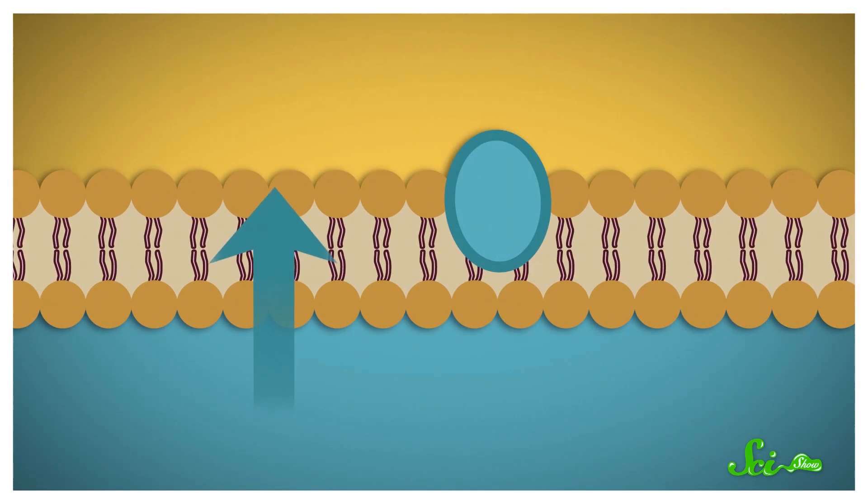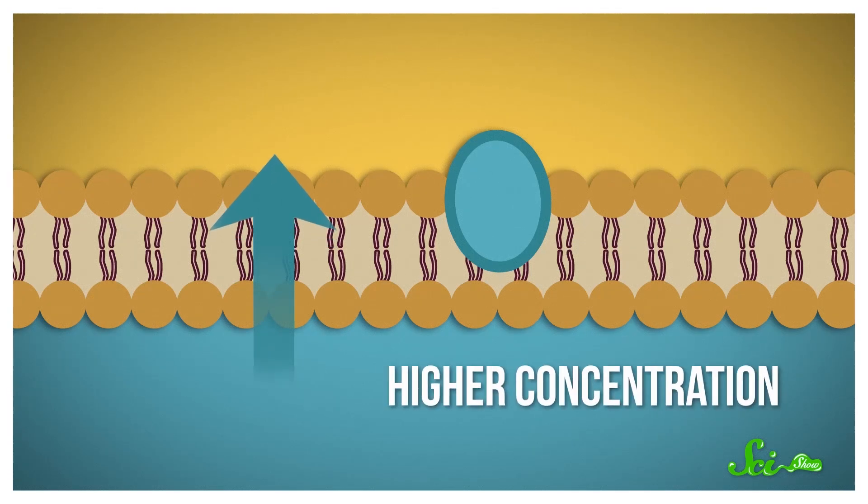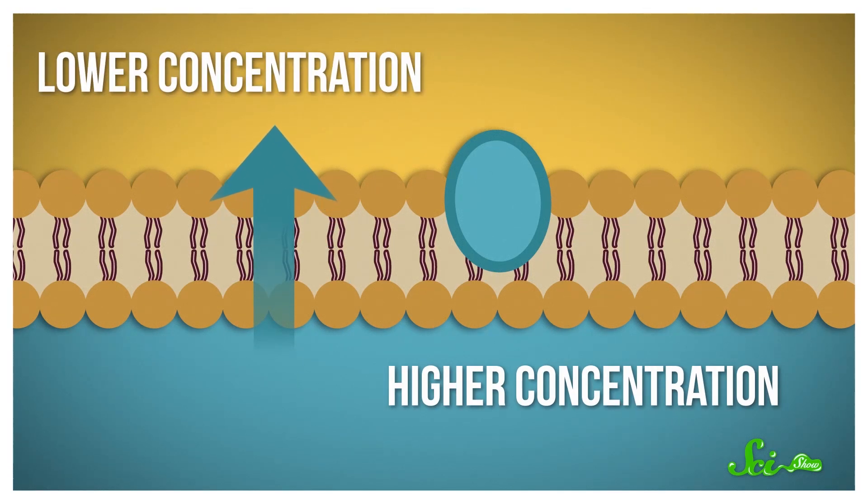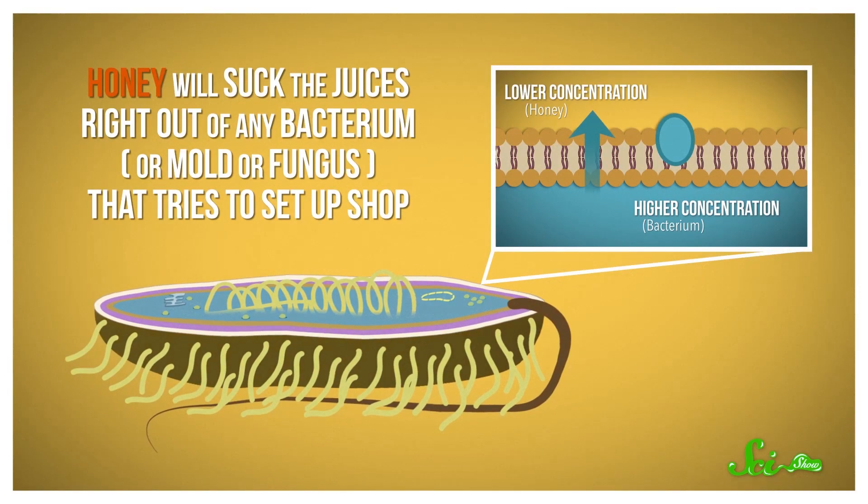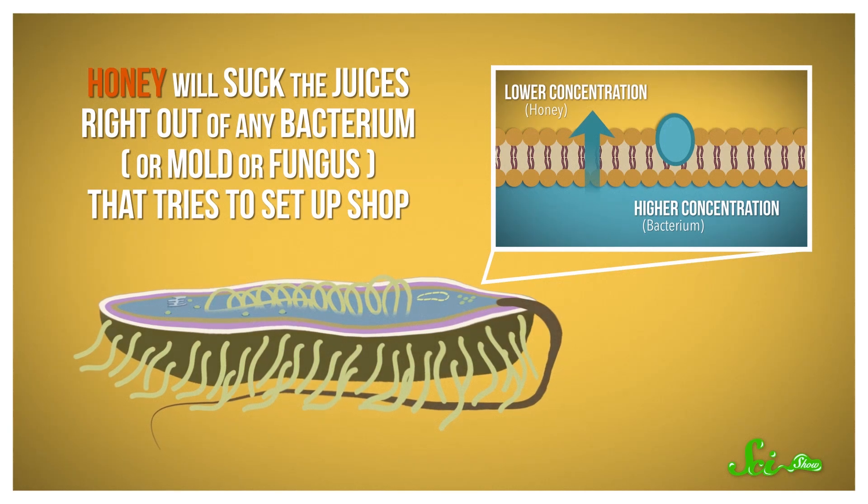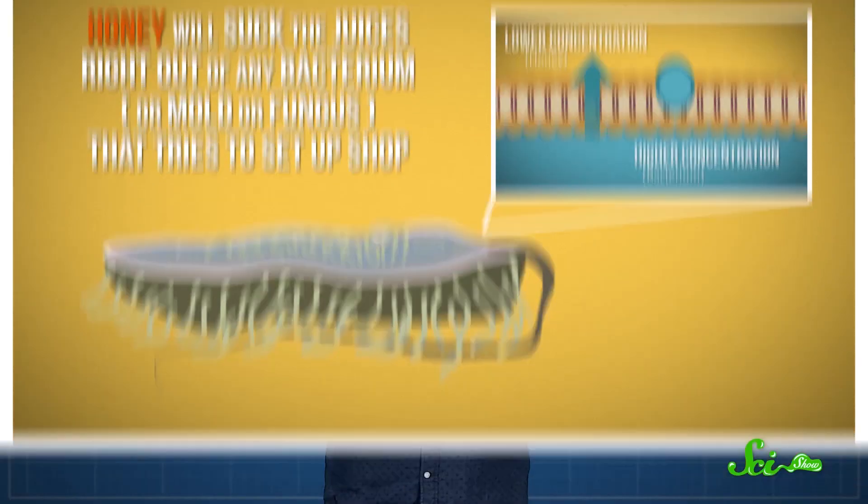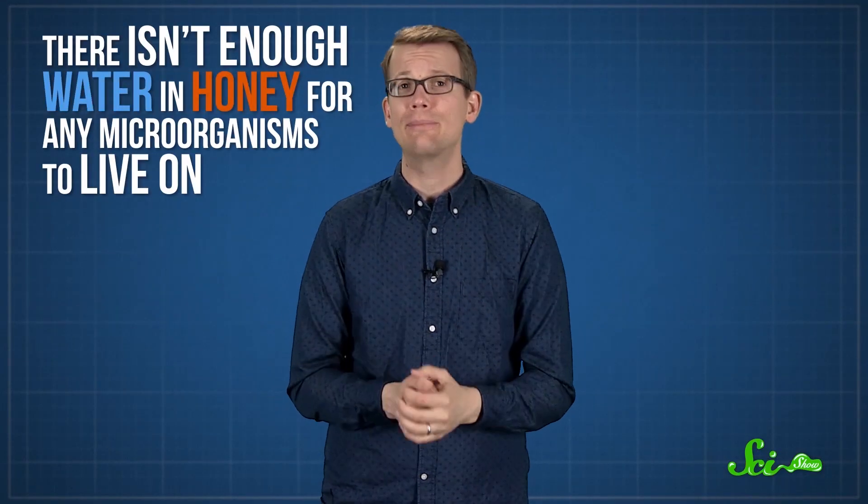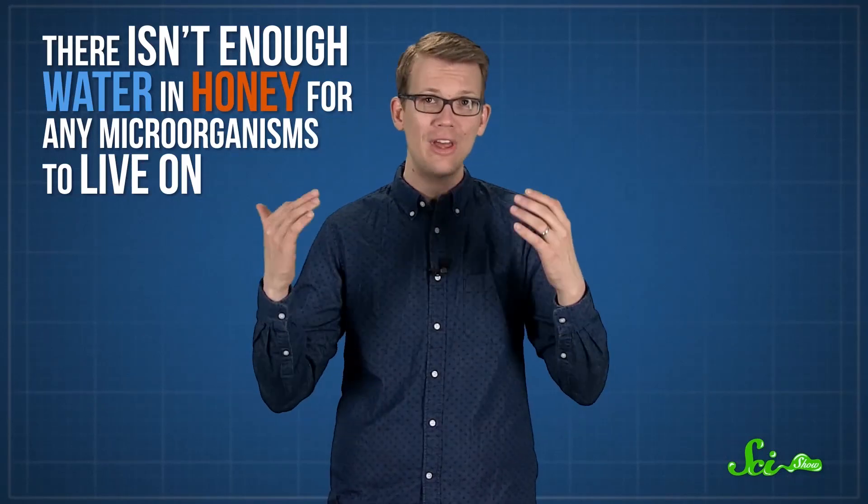Water can travel across cell membranes, from where there's a higher concentration of water to where there's a lower concentration. And there's a higher concentration of water in a bacterium than in honey. Which means that honey will suck the juices right out of any bacterium, or mold, or fungus that tries to set up shop. Plus, there isn't enough water in honey for any microorganisms to live on, so they die, and the honey doesn't spoil.